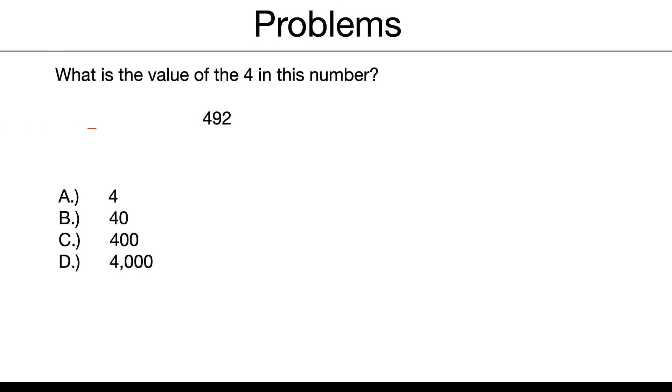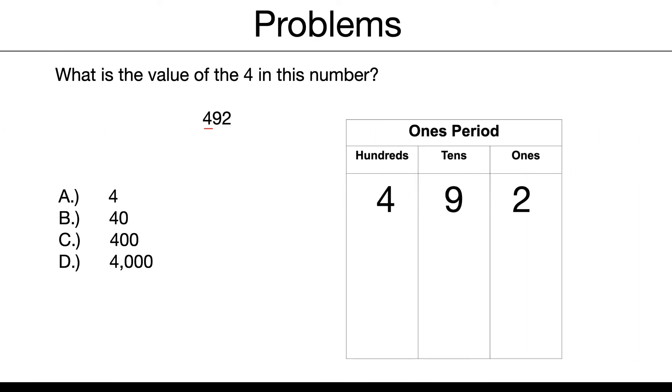What is the value of the 4 in this number? Okay, on a place value chart, it would look like that. The 4 is in the hundreds, and so it's, remember, not 4, but 400. So our answer is 400.